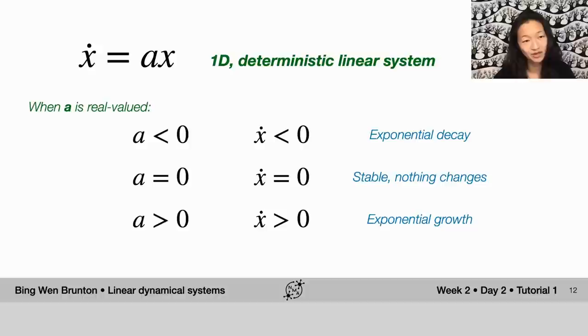So when this a is a number, it's a real valued number. If a is zero, then you can plug that into the equation above, and you see that x dot equals zero, which means that the system is stable and nothing changes. If a is even slightly less than zero,